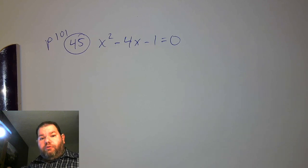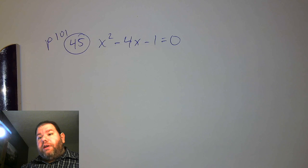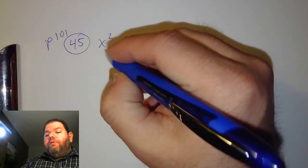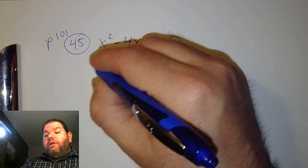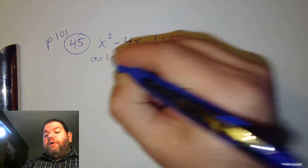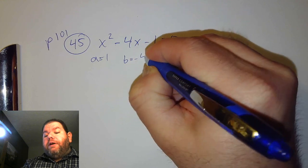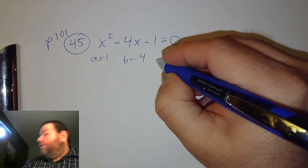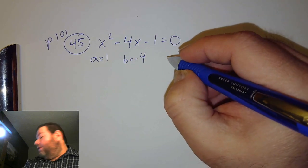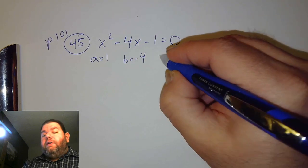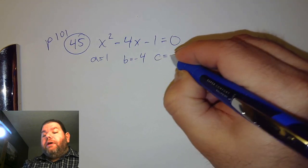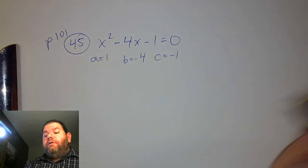In problem 45, we're meant to solve this with the quadratic formula. We'll go ahead and use a equals 1, b equals negative 4, and c equals negative 1.